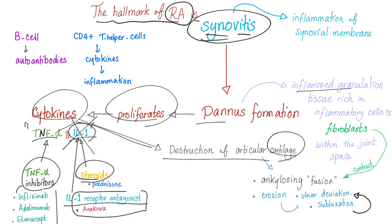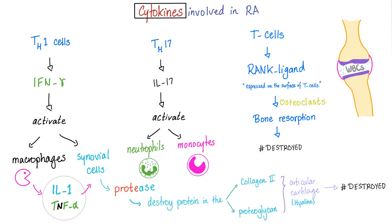In rheumatoid arthritis, both B cells and T cells are dysregulated. B cells produce autoantibodies. CD4 helper T cells, especially TH17, produce cytokines leading to inflammation. TH1 cells produce interferon-gamma, which activates macrophages and synovial cells. Macrophages produce interleukin-1 and TNF-alpha, stimulating synovial cells to release proteases that destroy collagen and proteoglycans. The cartilage is destroyed.